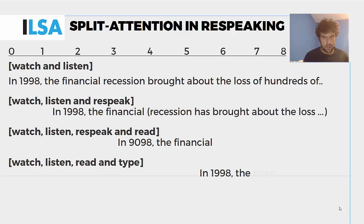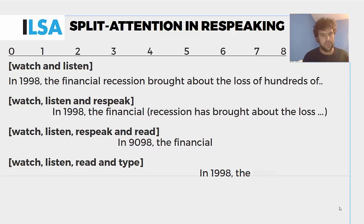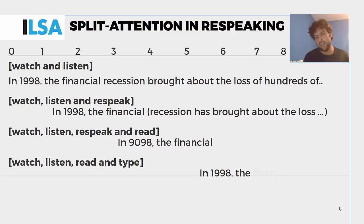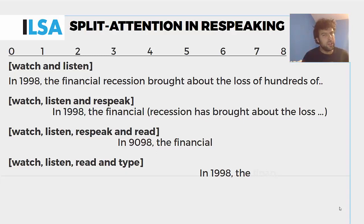If we take an example where the speaker says, 'In 1998, the financial recession brought about the loss of hundreds of jobs,' it would take about one to two seconds for the respeaker to react and say 'In 1998, comma.' Between seconds three and four, there's a misrecognition — 1998 is recognized as 90-98. The respeaker then has to choose whether to correct this error, and if they do, it would take a couple of seconds to get in there and correct it by, say, second five. The issue is that we're dealing with three moments in time: correcting what's been said in the past, as we keep listening to the present, in order to respeak it in the future.